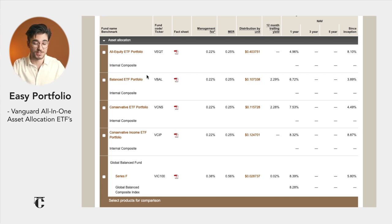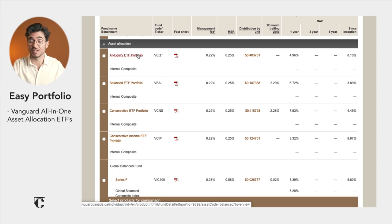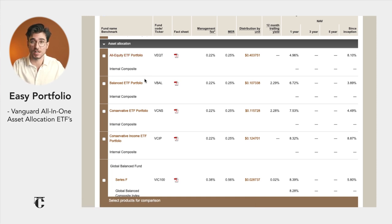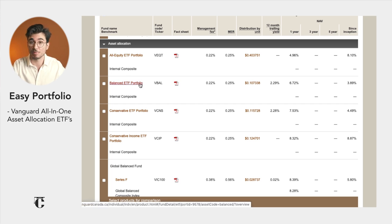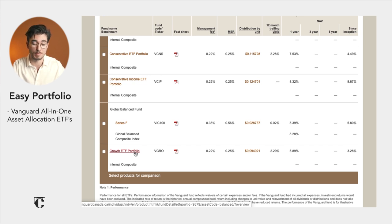These are the asset allocation all-in-one ETFs offered by Vanguard — some of my favorite index funds. They range from very conservative and safe to more risky, so you can select the one that suits your risk tolerance. The conservative income ETF portfolio is made up of 20% stocks and 80% bonds, while the all-equity ETF portfolio is 100% stocks. In between, the balanced ETF portfolio has 60% stocks and 40% bonds, and the popular VGRO has 80% stocks and 20% bonds.